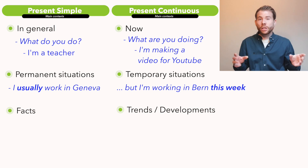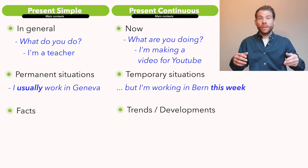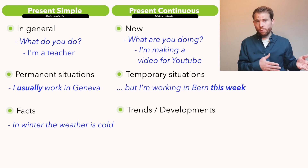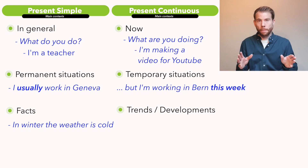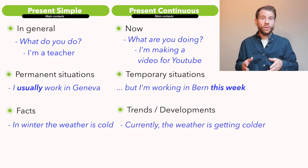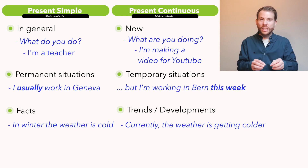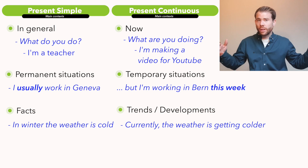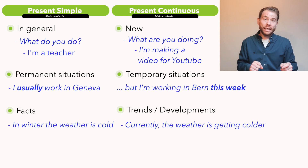The third context: facts versus trends and developments — things which are changing. For example: 'In winter, the weather is cold.' This is a fact, it's always true, so we use the present simple. On the other hand, 'Currently, the weather is getting colder.' This shows that at the moment, gradually, little by little, the weather is changing — not at this exact second, but over a longer period of time. So here again we see the distinction between facts and trends happening over a period of time.